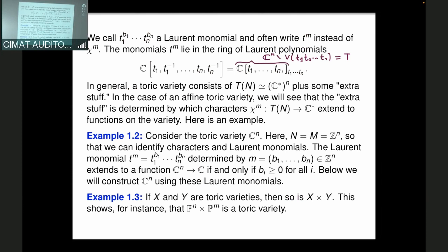In general, a toric variety has the big torus as a dense open set — in the Zariski topology, every open set is dense in an irreducible variety — plus some extra boundary strata. Those strata are determined by very concrete combinatorial data, which we will describe during these lectures.